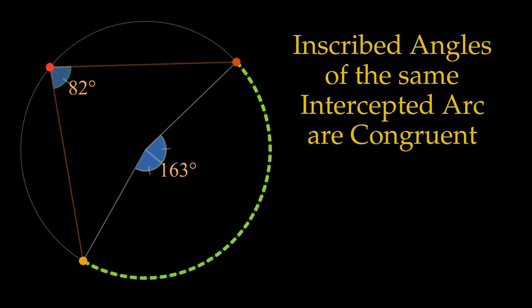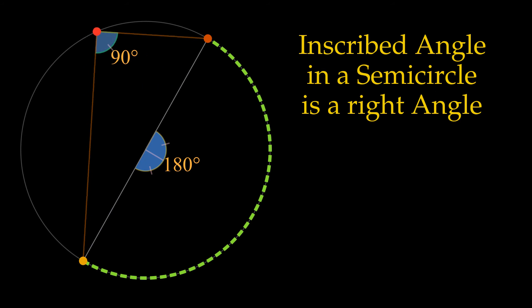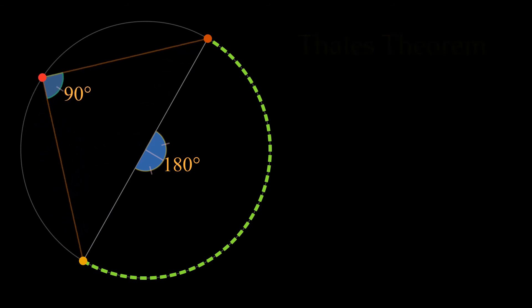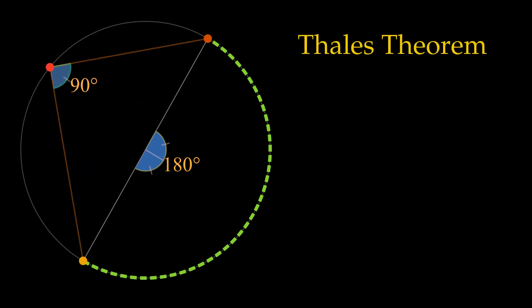An angle inscribed in a semicircle is a right angle. The intercepted arc is a semicircle. Therefore, it has a measure equivalent to two right angles. This special case is also called Thales' theorem.